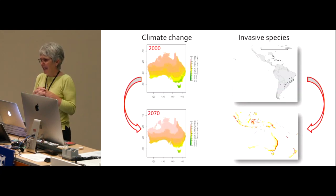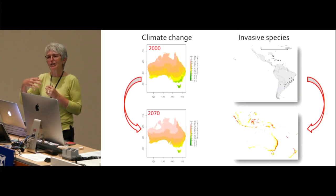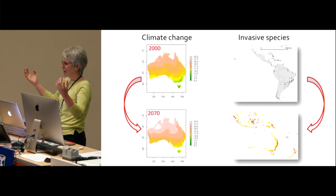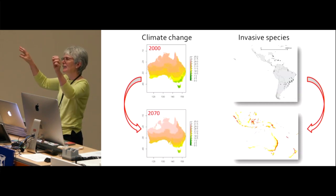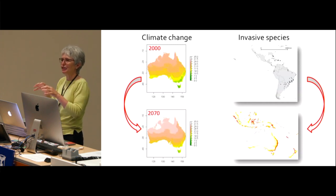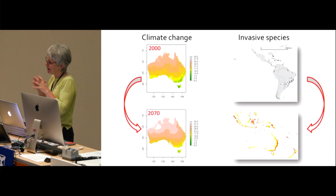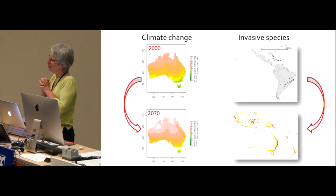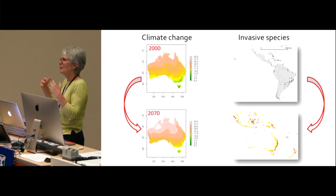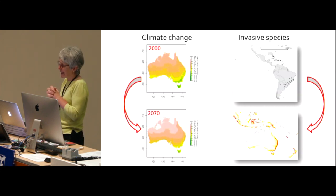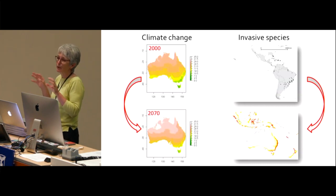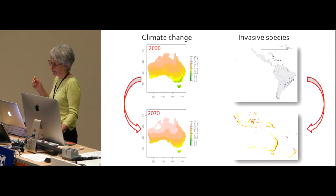Increasingly, these models are being used to predict new times and new places — predicting distributions in the future under climate change, or predicting the likelihood that an invasive species from elsewhere will find climatically suitable areas in Australia. These are fairly challenging and controversial uses because we're often extending models way past what's known. But they're in high demand as we try to answer important questions for conservation planning and management of species.